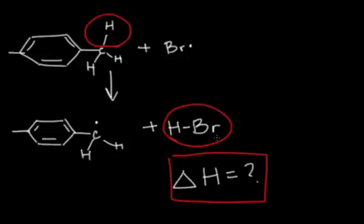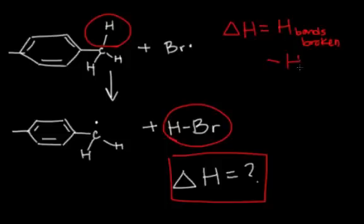One bond is being broken and one bond is being formed, and we can calculate the heat of enthalpy by finding the difference in energies between the two. We remember that the change in enthalpy is equal to the energy of the bonds broken minus the energy of the bonds formed.